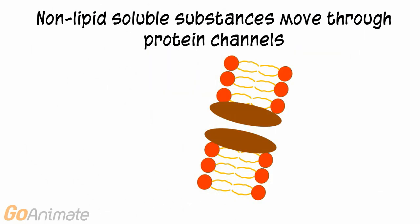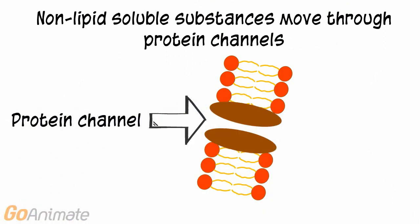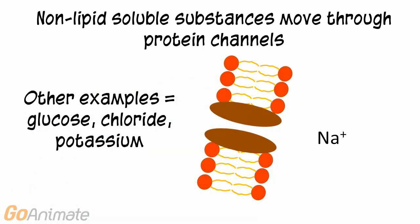Non-lipid-soluble substances cannot pass through the membrane, so they need a special doorway called a protein channel. In this example, sodium moves into a cell through a protein channel. Other examples of substances that move through protein channels include glucose, chloride, and potassium.